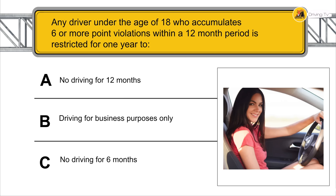Any driver under the age of 18 who accumulates six or more point violations within a 12-month period is restricted for one year to driving for business purposes only.